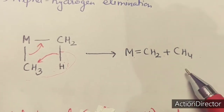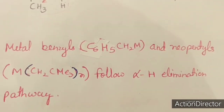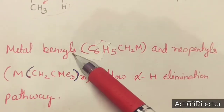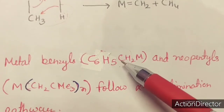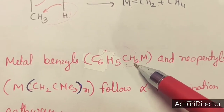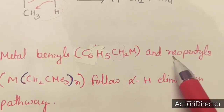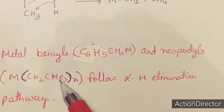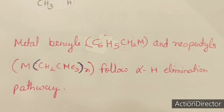Alpha hydride elimination occurs in organometallic compounds that have alpha hydrogen. For example, metal benzyls — C₆H₅CH₂M — where this carbon atom has an alpha hydrogen, so that hydrogen can be eliminated as a hydride ion from the alpha carbon. Another example is the neopentyl complex, which also has an alpha hydrogen. So if a compound has an alpha hydrogen, there may be the chance of alpha hydride elimination.